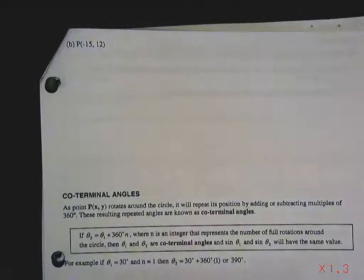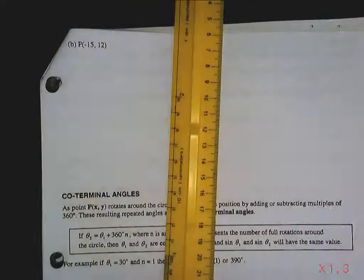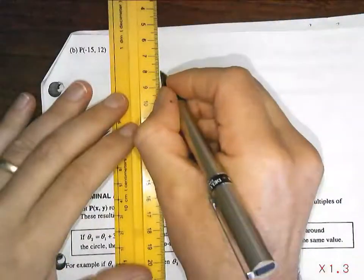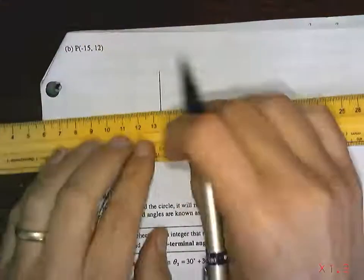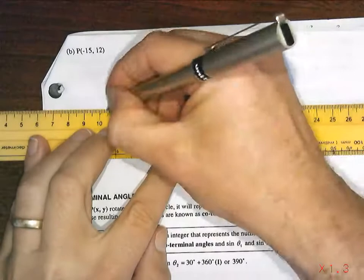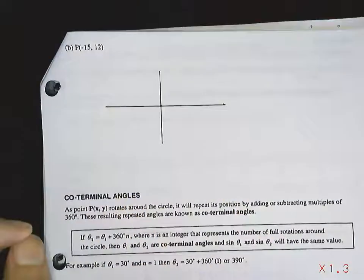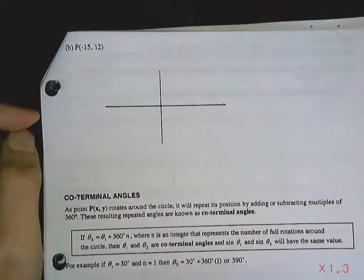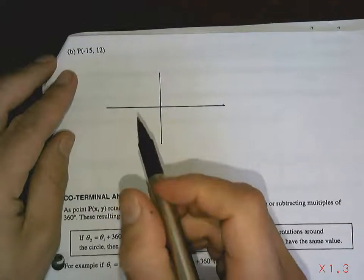Okay guys, so that was an easy one where the point that we were after, the terminal arm, landed in quadrant one. It gets more interesting when the terminal arm is not in quadrant one. So for example, this one has x equals negative 15.